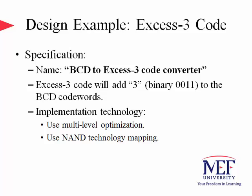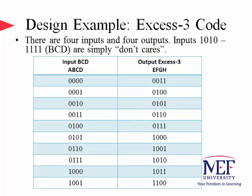Let us consider our design example. We are designing a combinational circuit that will convert a BCD, or binary coded decimal, code to XS3 code. So we named the design project as BCD to XS3 code converter. This code will simply add decimal 3, which is 0011 in binary, to each of the BCD code words. We shall use multi-level optimizations to reduce the number of gates in the implementation and use NAND technology mapping for efficiency reasons. There are four inputs and four outputs to the circuit. Inputs from 1010 to 1111 in BCD code words do not map to anything, and they are therefore simply don't-cares in our design. The corresponding four outputs, the XS3 code words, are shown on the right-hand side of the truth table. Outputs are labeled as E, F, G, and H.